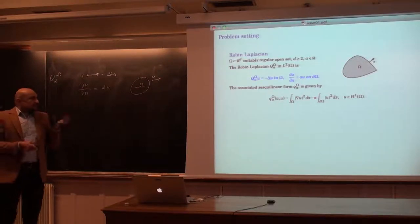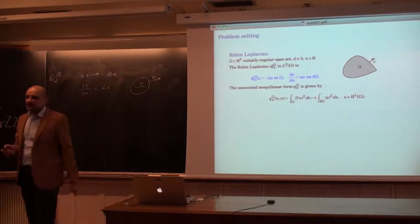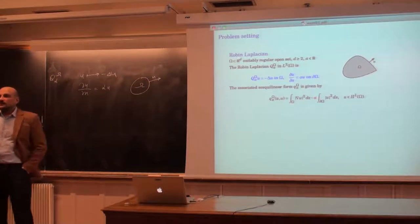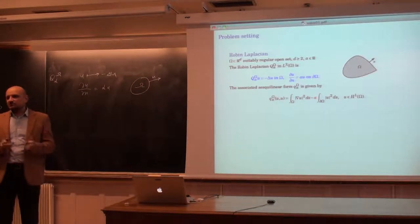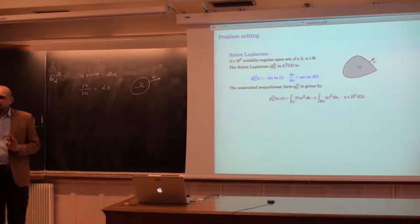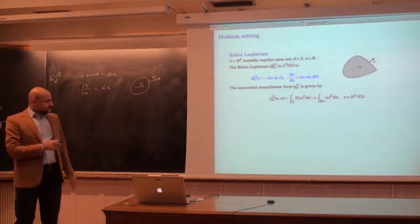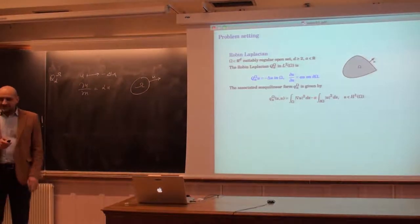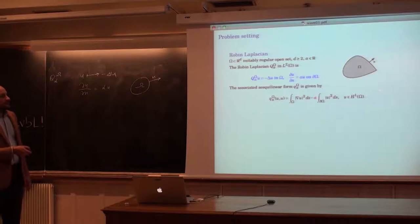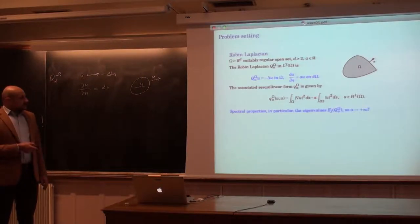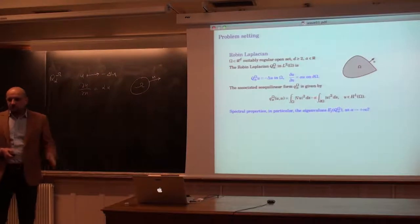In all works on this topic, we work with the sesquilinear form and not with the operator itself. We will be interested in the spectral properties of this operator, in particular the eigenvalues, which I denote by E_j. I will be very interested in the asymptotic regime when α goes to plus infinity. If you look at the expression for the sesquilinear form, you see that we have minus α here, so if you put any function into the form, when α goes to plus infinity, unless the function vanishes on the boundary, it goes to minus infinity.